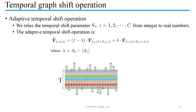We propose an adaptive temporal shift operation to solve both shortcomings. Inspired by active shift learning, we relax the temporal shift parameters from integers to real numbers. The non-integer shift can be computed by linear interpolation, which is differentiable and can be trained through backpropagation.